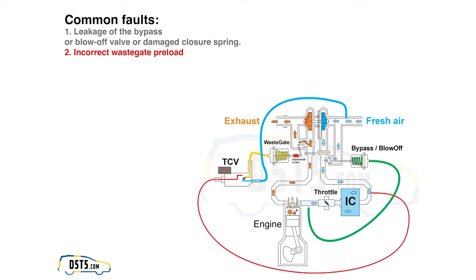If the preload pressure — the tension of the rod holding the wastegate closed — is too low, the wastegate may open when the engine control unit does not require it, and the exhaust gas meant to spin the exhaust turbine will escape into the exhaust. This results in a drop in pressure in the compressor part, and the engine won't achieve the desired performance. Preload is mechanically adjusted by shortening or lengthening the wastegate control rod by screwing the adjustment screw.